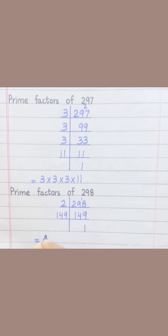Equal two multiply one hundred forty-nine.